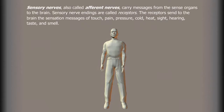Sensory nerves, also called afferent nerves, carry messages from the sense organs to the brain. Sensory nerve endings are called receptors. The receptors send to the brain the sensation messages of touch, pain, pressure, cold, heat, sight, hearing, taste, and smell.